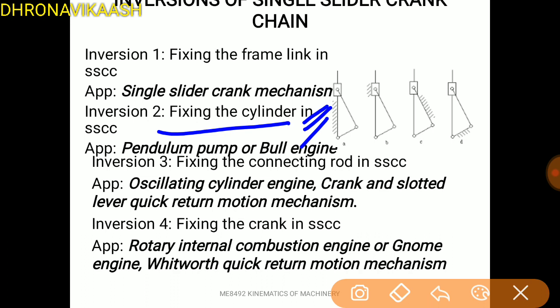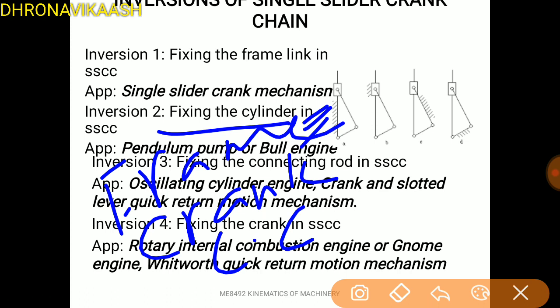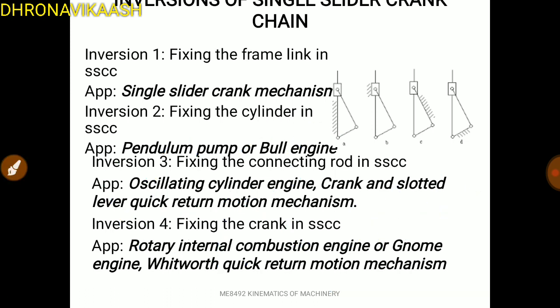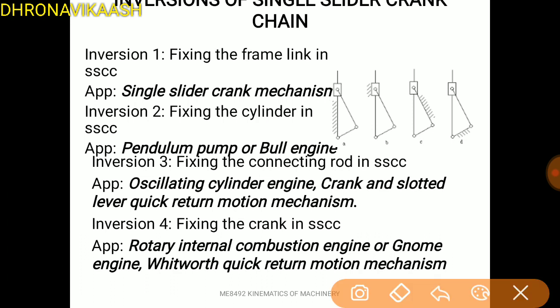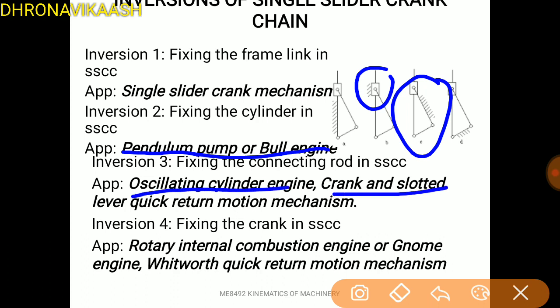So this is the first inversion of the frame. The second one is the crank, the third one is the connecting rod, and the fourth one is the slider. The second inversion of the frame and the third inversion: the frame fixed, the side fixed, and the connecting rod fixed, which is the oscillating cylinder engine, and the crank and slotted lever quick-return mechanism.